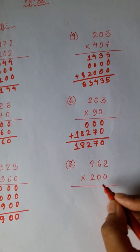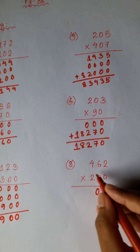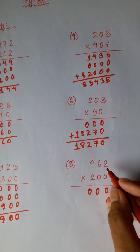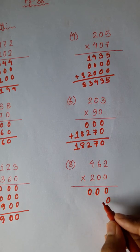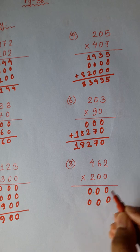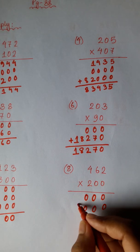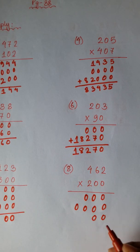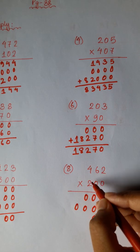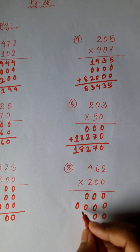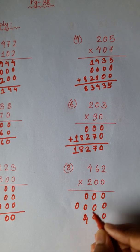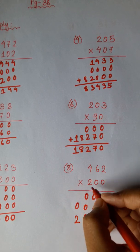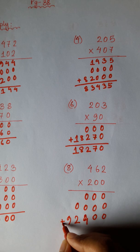2 zeros are 0, 6 zeros are 0, 4 zeros are 0. 2 zeros are 0, 6 zeros are 0, 4 zeros are 0. 6 twos are 12, 2 twos are 4, 6 twos are 12 carry 1, 4 twos are 8 plus 1 is 9.